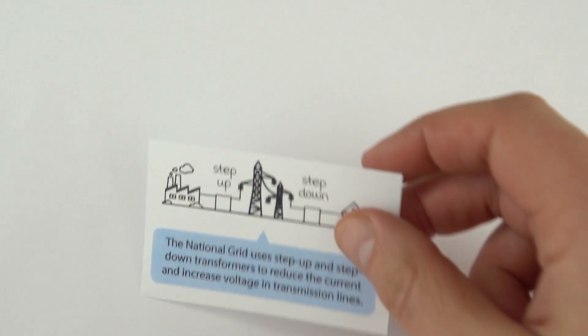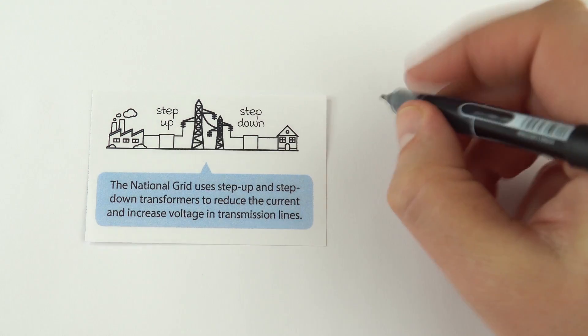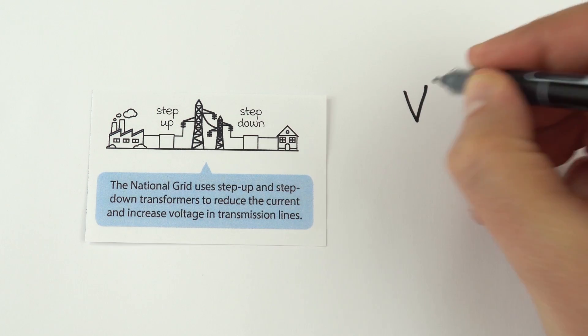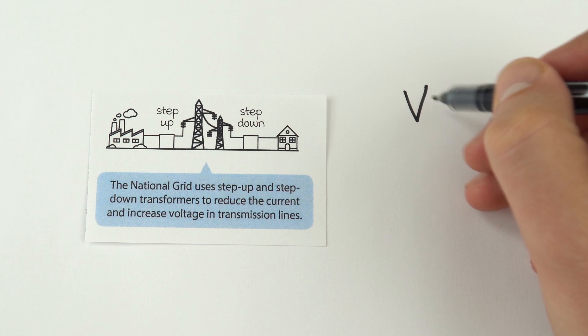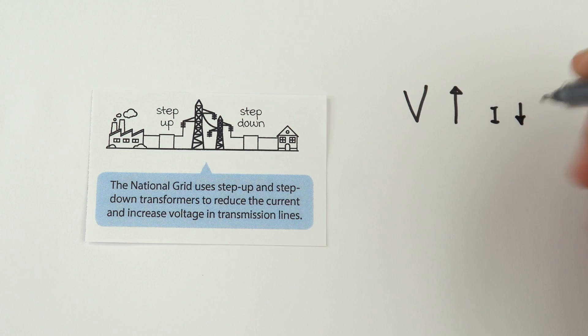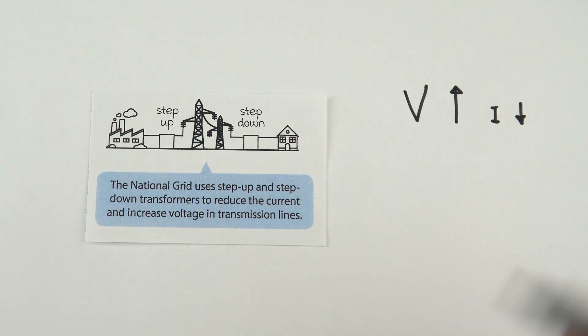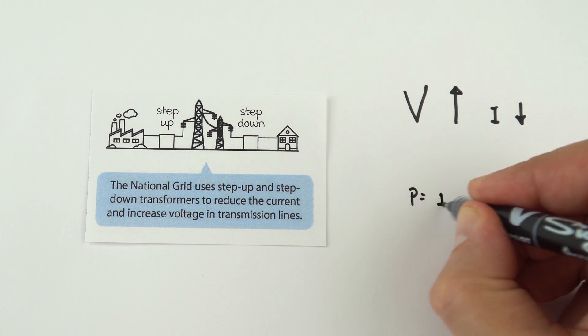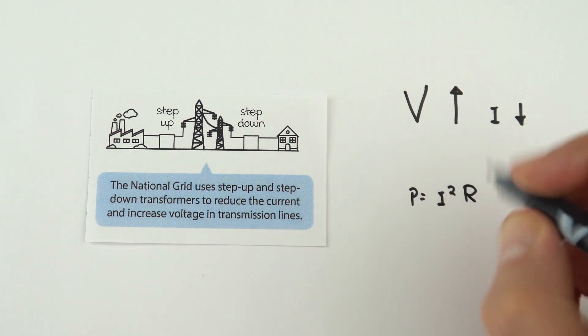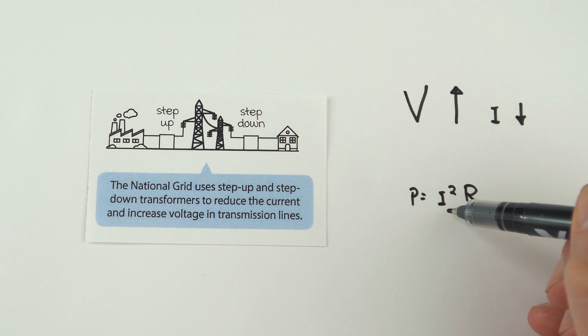Now let's have a look at some of the topics. Why is it that the national grid uses step-up and step-down transformers? A step-up transformer increases the potential difference or the voltage in the national grid. When the potential difference goes up, the current goes down. That's really important because when you have a smaller current you reduce energy losses. The reason for this is that the power losses are equal to I squared R in those cables. If you reduce the current by a thousand times, you reduce the power losses by a million times.